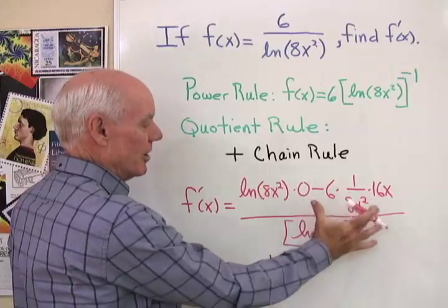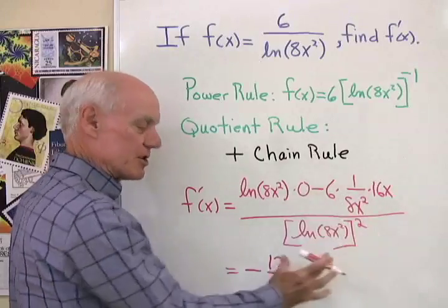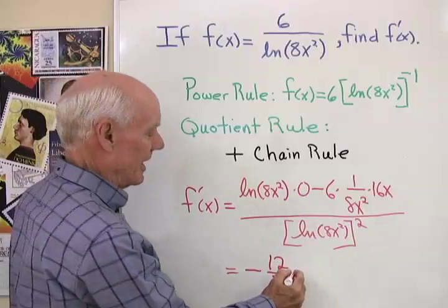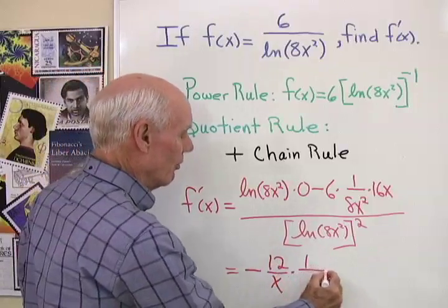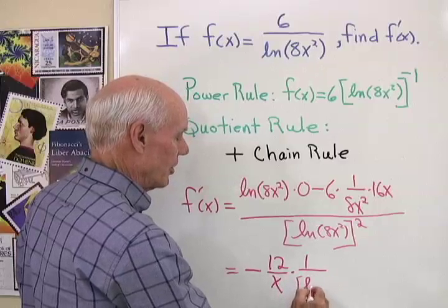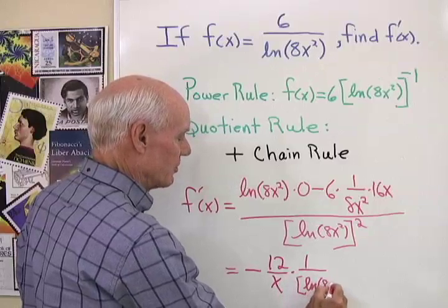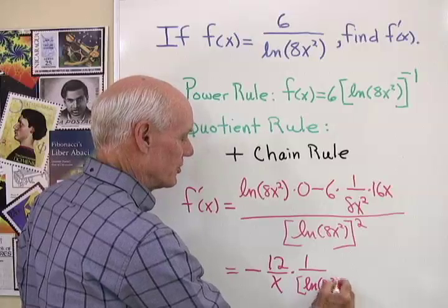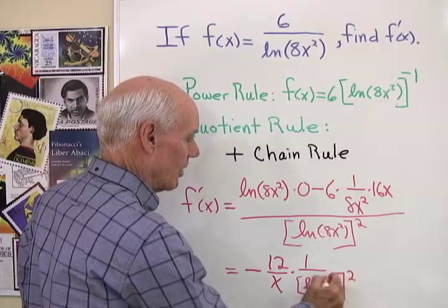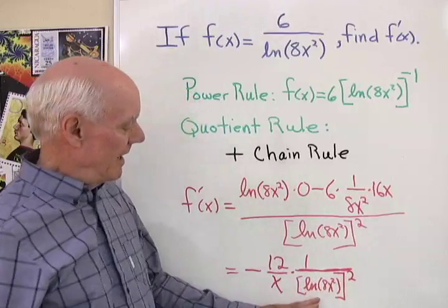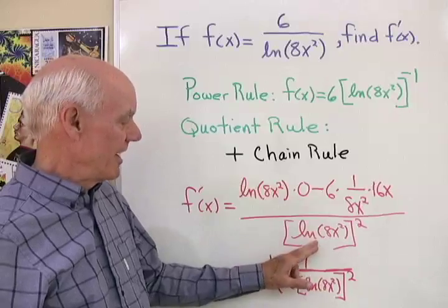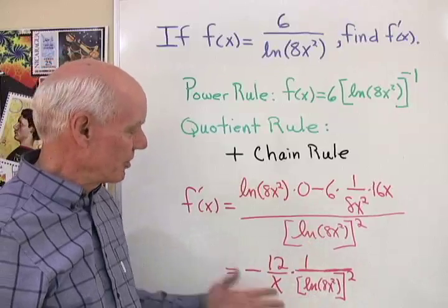that's the numerator all divided by this, so let's multiply by the reciprocal of that, so times 1 over natural log 8x squared, close parentheses, that whole quantity squared. So that's my fraction right there, so instead of dividing by this, I multiply by its reciprocal.